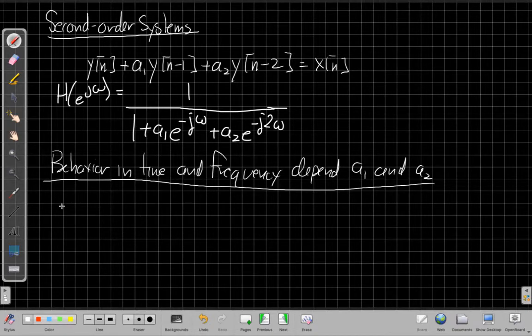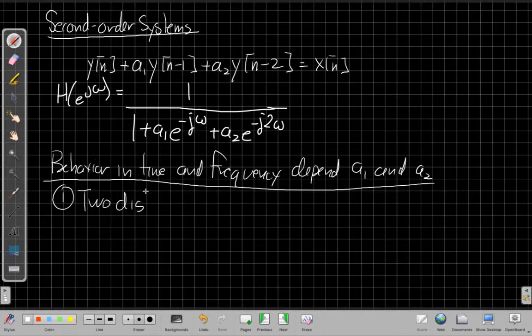So there's sort of three cases that we're really mainly interested in. The first case is if we get two distinct real roots.